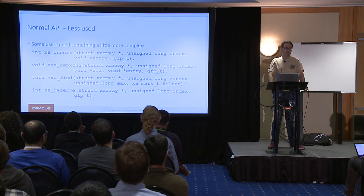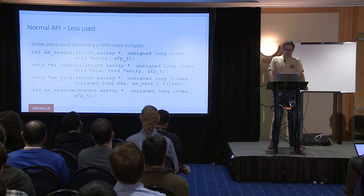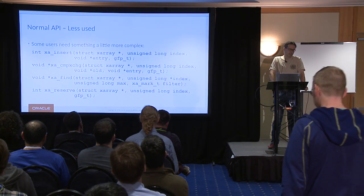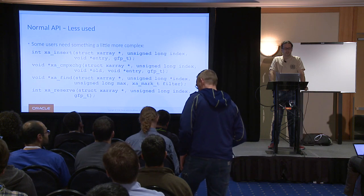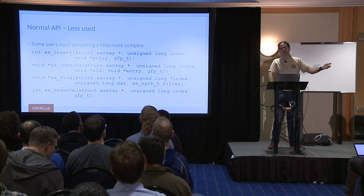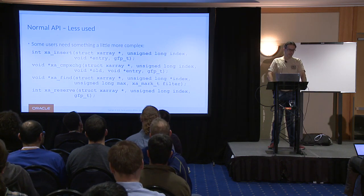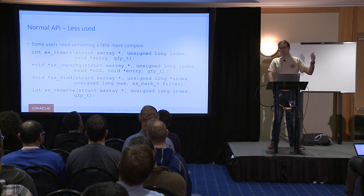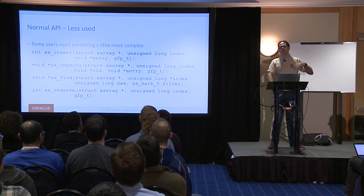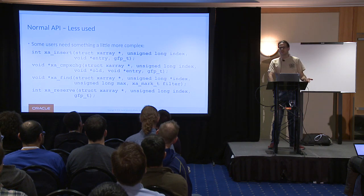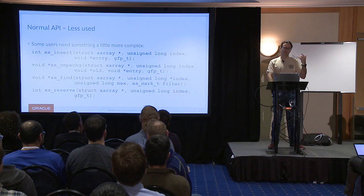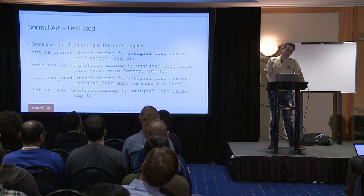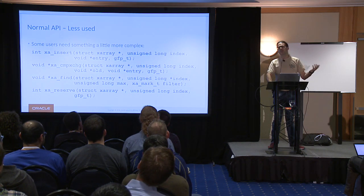There are some less-used parts of the normal API. You can do an insert instead of a store. The difference is that you get back an error — I think it's EEXIST — if there's something non-null there. xa_insert is actually implemented as a wrapper around xa_compare_and_exchange; it's compare-and-exchanging with null. The big advantage of compare-and-exchange is that you get back the current value so you can do different things depending on what you get back.